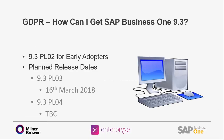SAP Business One 9.3 is already available for early adopters and we are at patch level 2 currently. SAP provides a schedule for upcoming patches — I've listed the date for patch level 3, but be aware that release dates are subject to change. To find out more, keep an eye out for our newsletters, check the website, contact your account manager or speak to support. Better still, why not start planning for your upgrade now? As well as support for GDPR there are lots of great new features in 9.3, and we will be looking at some of them in more detail in our next webinar in two weeks time.